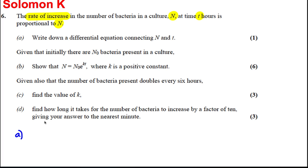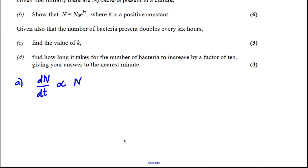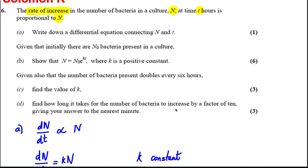So the rate of increase, dN by dt, that's the rate, is proportional to N. But the way we write that as an equation is dN by dt is equal to KN, where K is a constant. Okay, so there's part A done very easily.